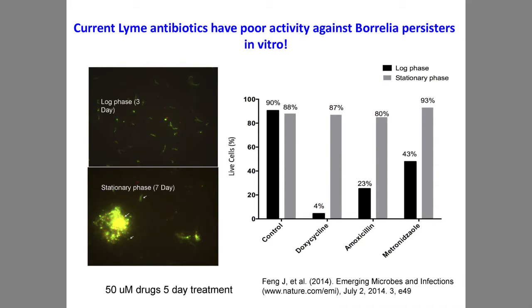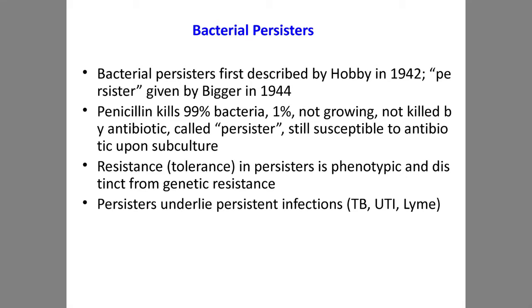Not only in vivo, but in vitro as well, current Lyme antibiotics cannot quite eliminate the Borrelia organism. We and many other groups have demonstrated that current Lyme antibiotics have good activity against the growing forms — the log phase culture — but have very poor activity against stationary phase culture, which is enriched in persister forms. The concept of bacterial persisters is not new; since the 1940s when penicillin became available, there was always a small percentage of bacteria not killed by penicillin.